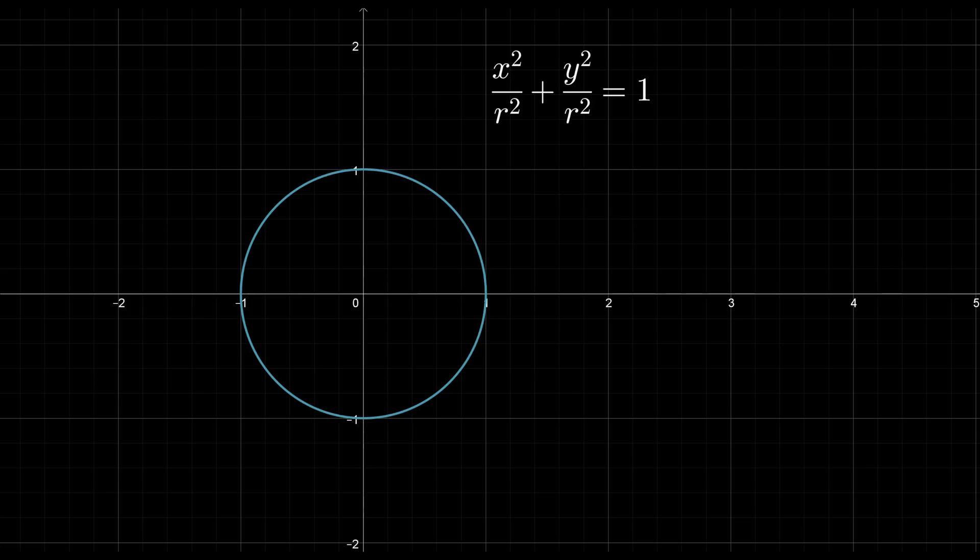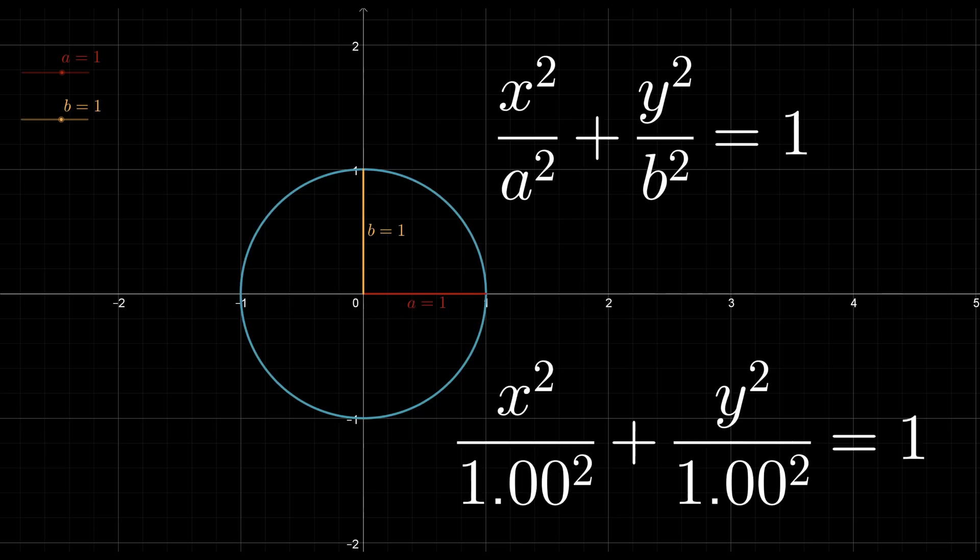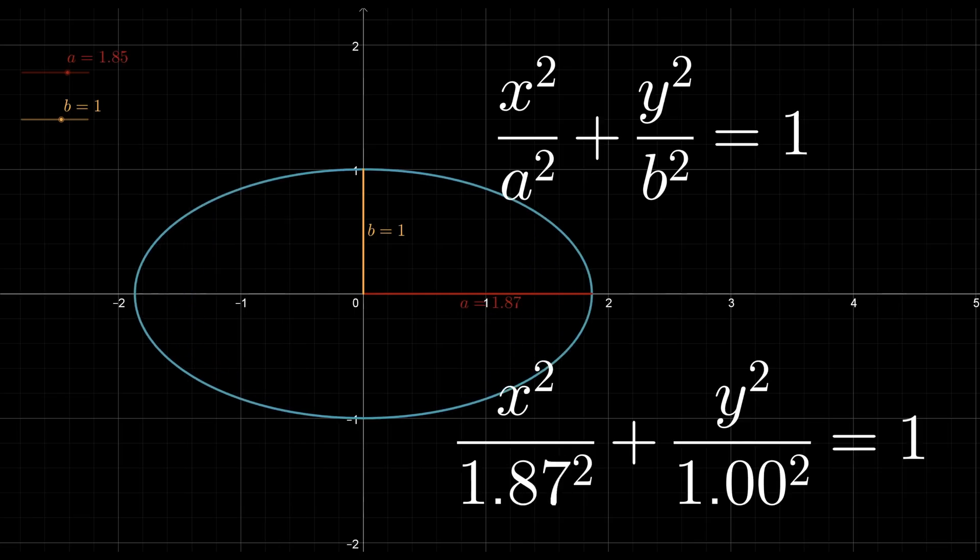We could of course divide both coordinates squared by the radius squared and that would equal 1, which looks like a more complicated equation to start with, but it does now mean we can change the radius in each direction separately, sort of.